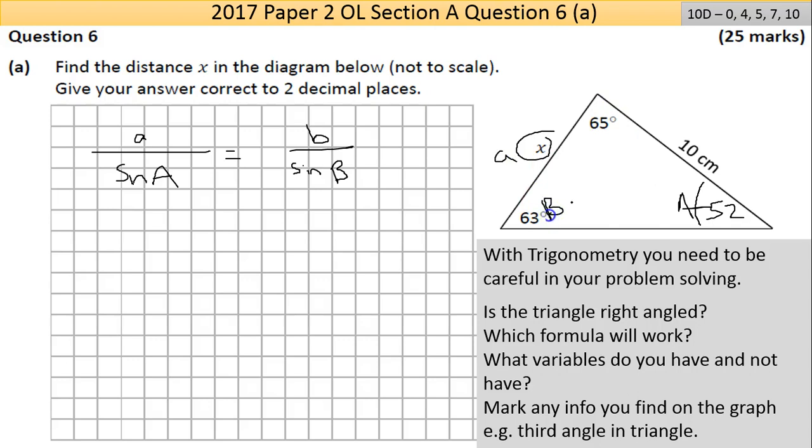If I label it, I could call that angle A and side a, then this would be angle B and side B. Do I have little a? No, that's what I'm looking for, that's my question mark. Do I have the big angle? Yes. Do I have a side? Yes. So do I know three of the four unknowns? I do, so sine rule will work.